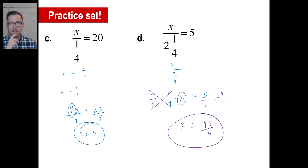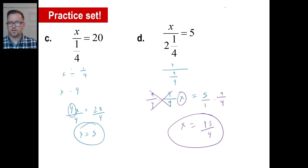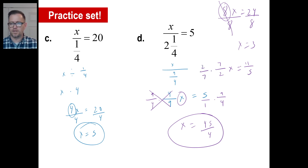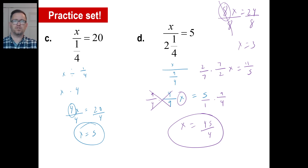Just make sure: if you have a number like 8x equals 24 and the coefficient is an integer, just divide by 8 on both sides — x is 3. If you have a fraction, like 7 halves x equals 11 over 5, immediately multiply by the reciprocal on both sides — two sevenths, two sevenths, boom, you got it. You all have a great day, and I will see you next time.